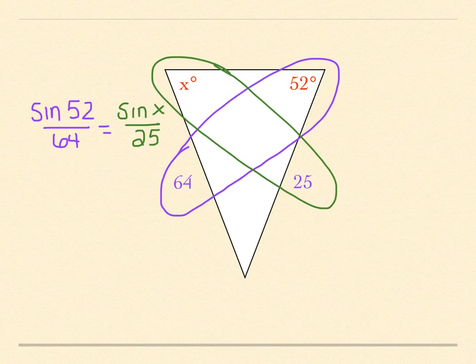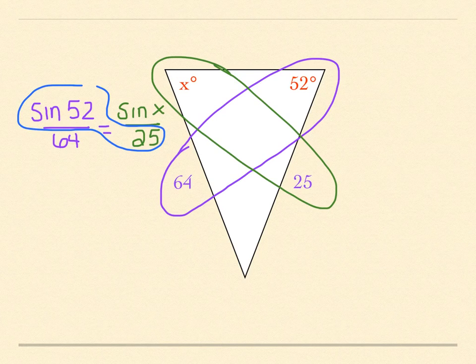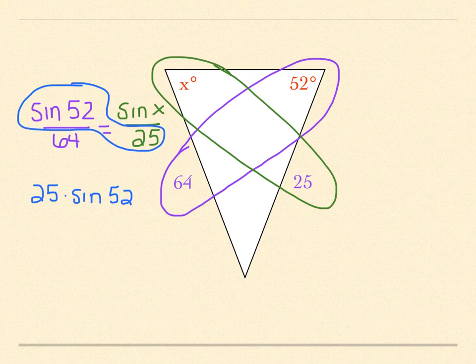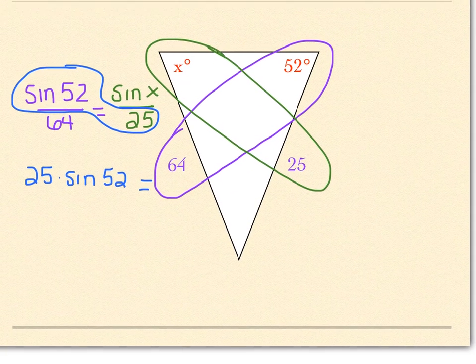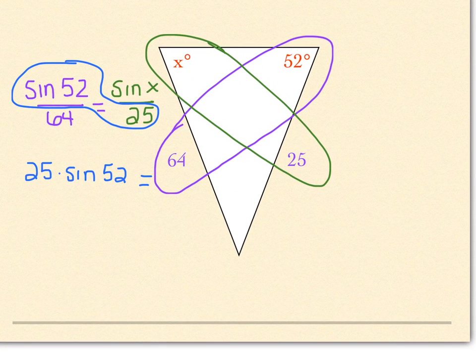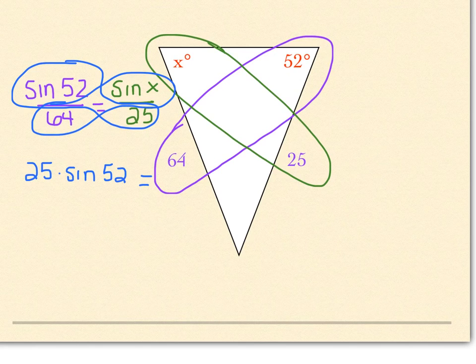When I go to cross-multiply that, I'm going to end up doing 25 times sine 52. And again, I'm not typing that in yet because I'll do it in my calculator all in one step. Is equal to 64 times sine X.